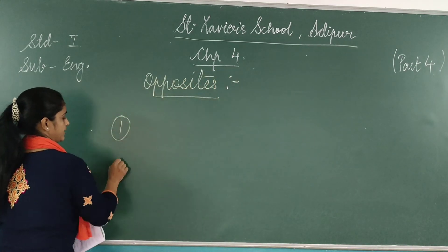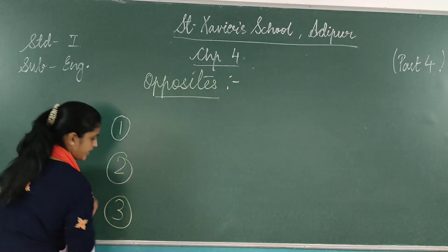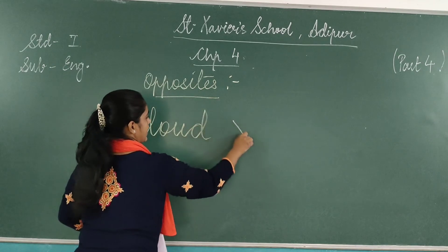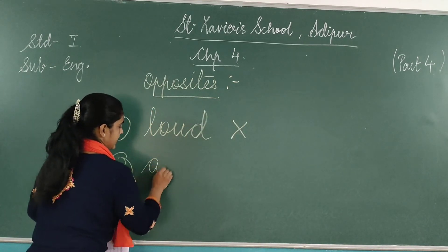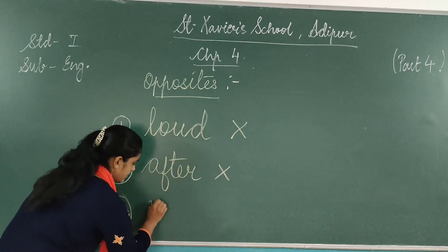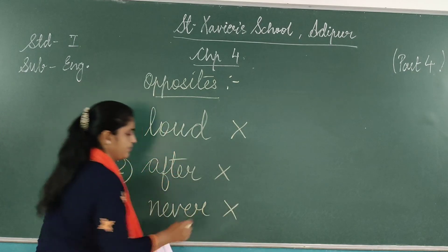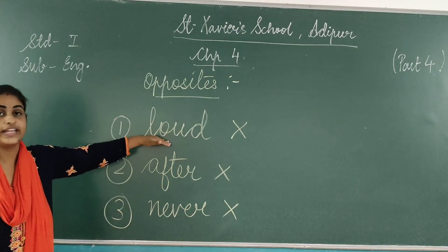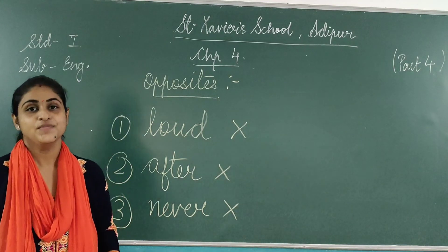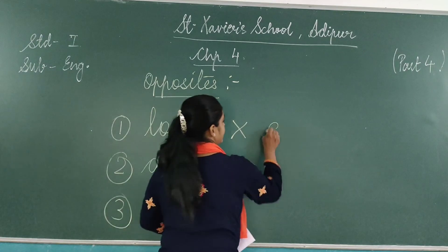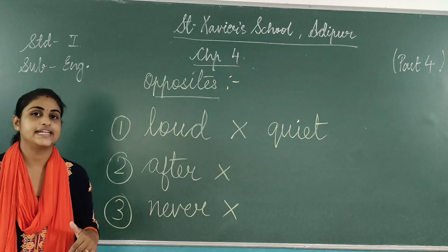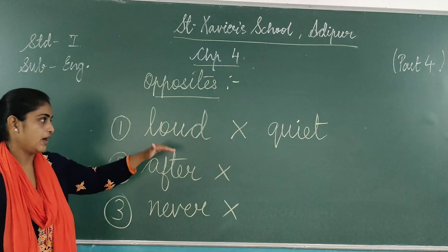We have three opposites. One, two, three. First one is L-O-U-D, loud. The opposite of loud is Q-U-I-E-T, quiet. Loud — quiet.